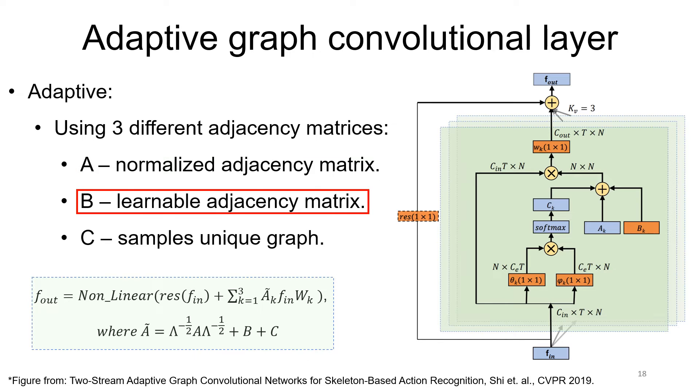B, a learnable adjacency matrix. And C, an attention-based sample's unique adjacency matrix.